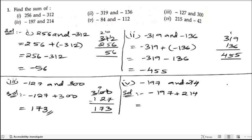Now let us subtract 214 minus 197. So 14 minus 7 is 7, 10 minus 9 is 1 and 1 minus 1 is 0. So 17 is the answer.